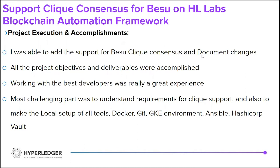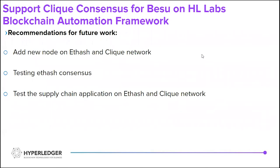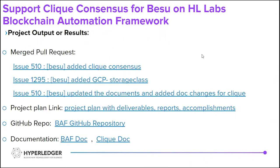My mentor helped me a lot during the entire mentorship phase and I'm thankful to him. Some recommendations for future work are to add a new node on IBFT and QBFT network, then testing IBFT consensus, and also to test the supply chain application on IBFT and QBFT network. There were three pull requests that were merged: the main one was to add QBFT consensus, issue number 510; the next was to add the GCP storage class; and the final was to update the documentation and add documentation changes for QBFT.